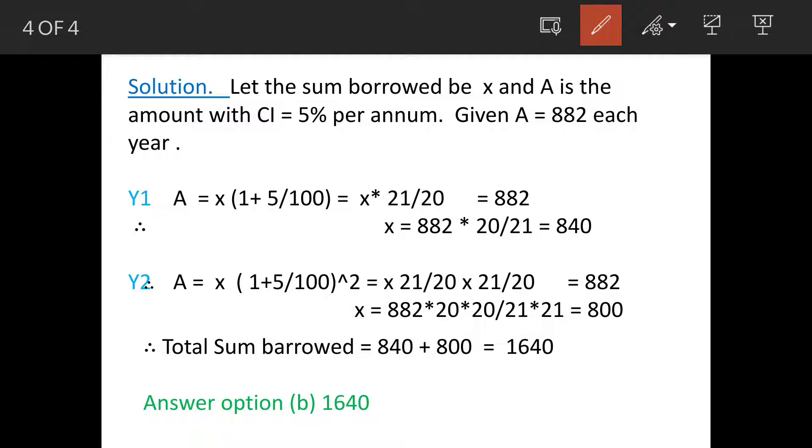Let's assume the amount borrowed is x rupees and A is the amount with compound interest of 5% per annum. It is given that A equals 882 for each year. Now we'll calculate this amount A separately for two separate years.